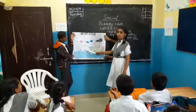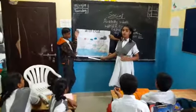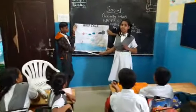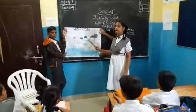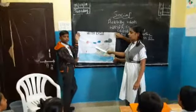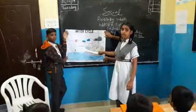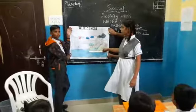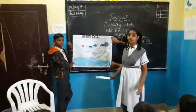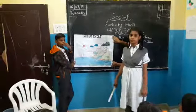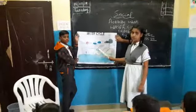Here we can see evaporation is happening, where the water becomes gas and moves into the air. That becomes into the cloud, and from this we may get some water particles from the cloud, which is known as transpiration.